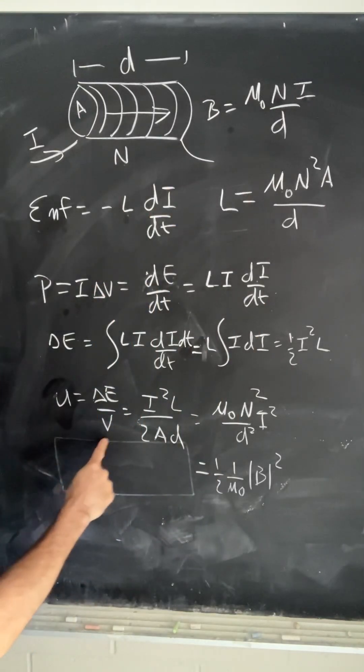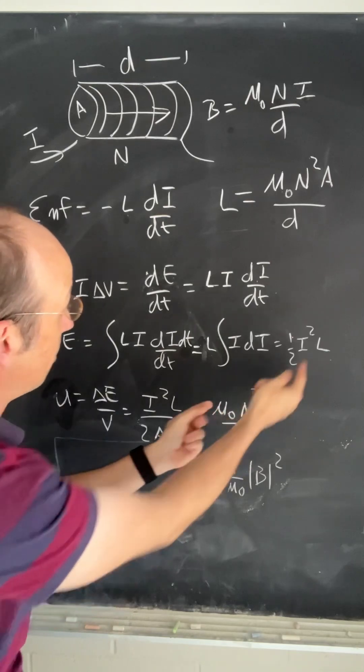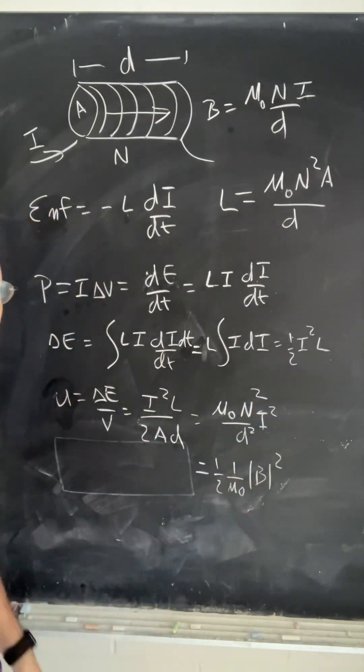Then if I go and divide by the volume, which is A times D, and then convert it back from the inductance, I get one half mu B squared.